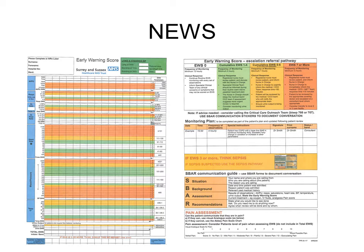However, six years on, still over 20% of trusts had not adopted the national early warning score. So in 2017, the Royal College of Physicians revised the national early warning score and developed NEWS2, which has since been endorsed by NHS England and mandated to be in all acute NHS trusts in England by March 2019. SASH has chosen to present NEWS2 in a booklet style that has been rolled out to all adult wards across East Surrey Hospital, excluding maternity, on the 10th of September 2018.